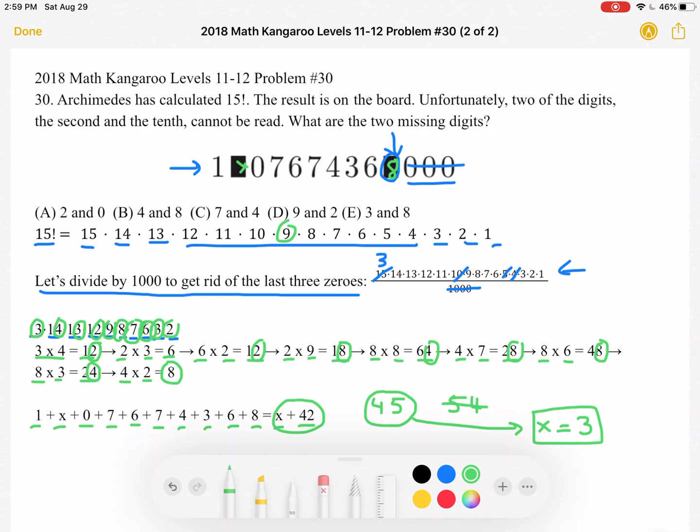We know that the number that goes here must be 3. So we found out that the missing digits are 3 and 8, and that is answer choice E. Thank you so much for watching and please subscribe if you would like to see more videos.